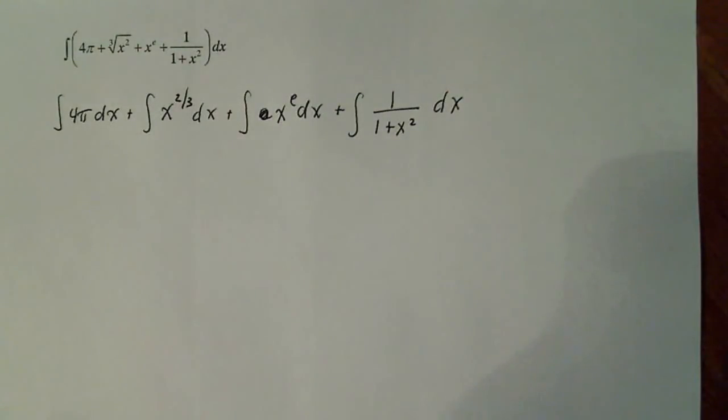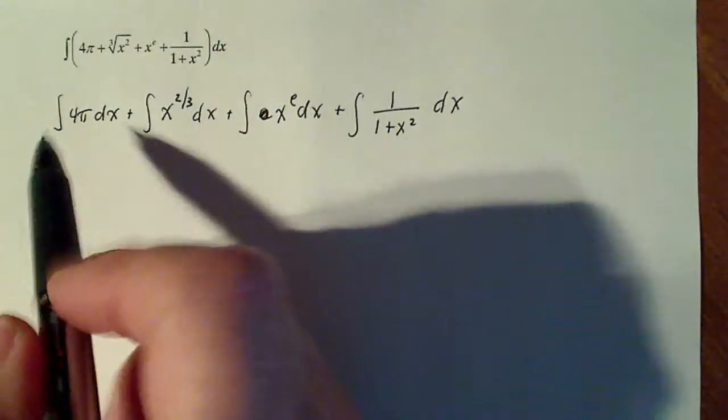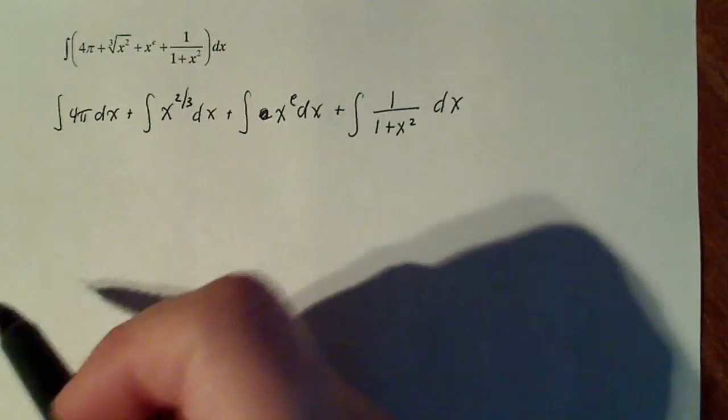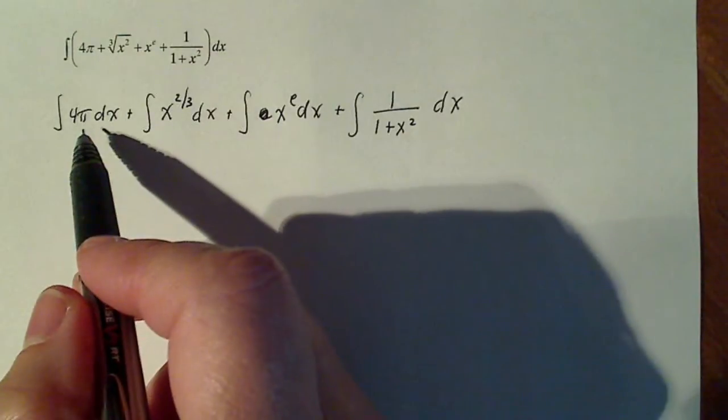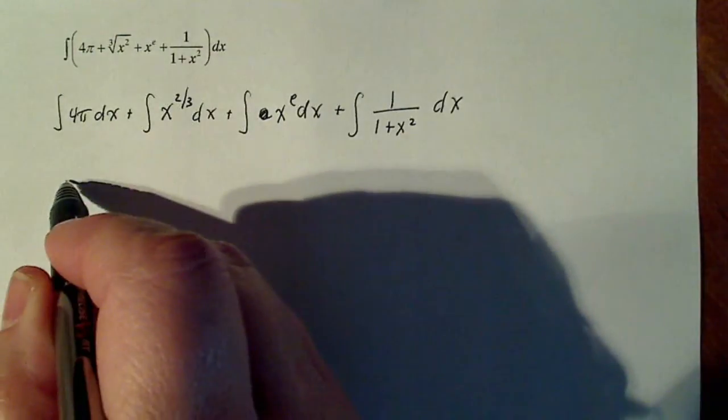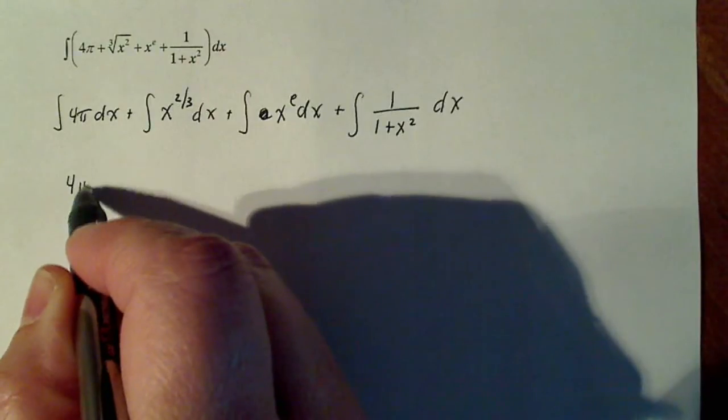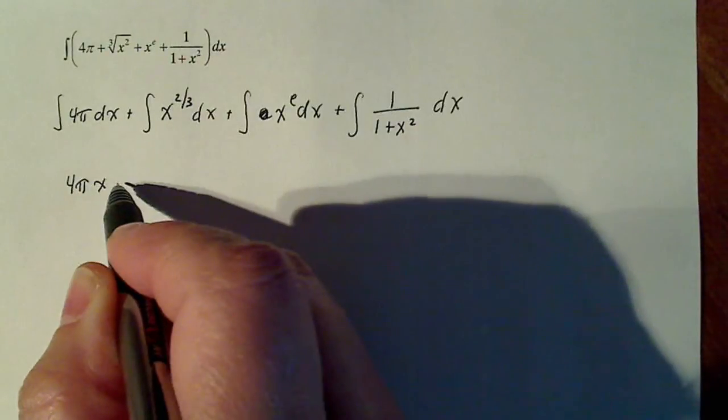All right, there we have. Now we have just four little individual ones to work on and they're not so bad. This right here is just four pi or four or 22. It's just a constant. So the integral of a constant is going to be that constant times x plus.